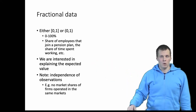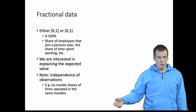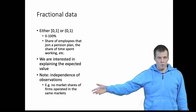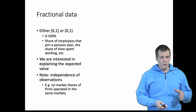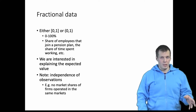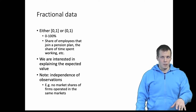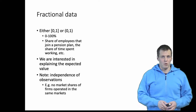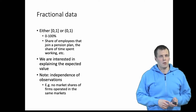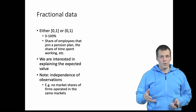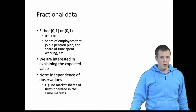One thing to note is that these models assume independence of observations. For example, if we have five companies that split the market, we can't explain market shares using this kind of model because the market shares are not independent — the five companies' market shares must sum to 100.